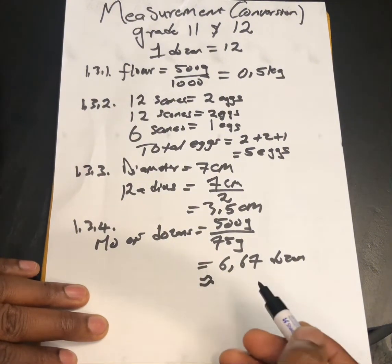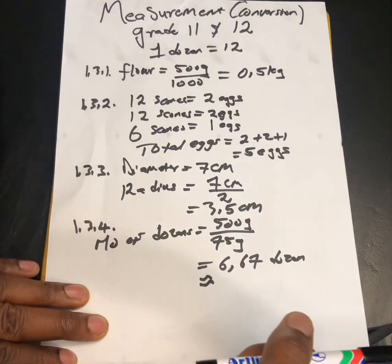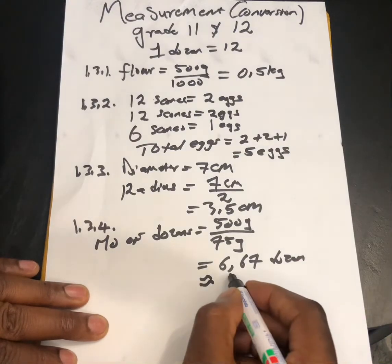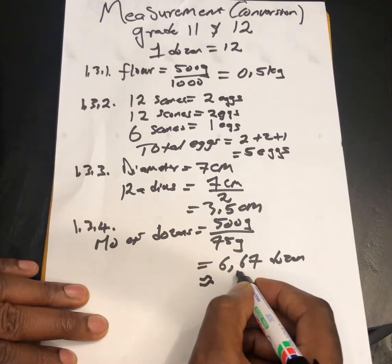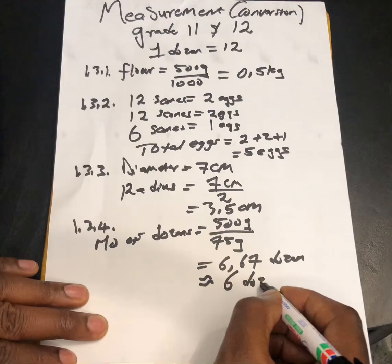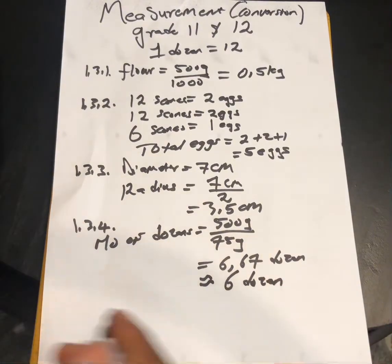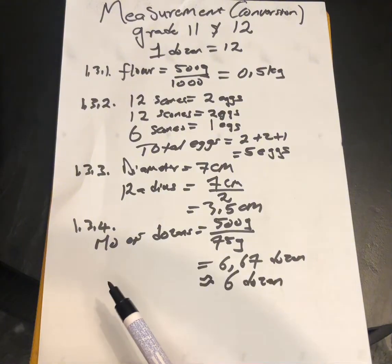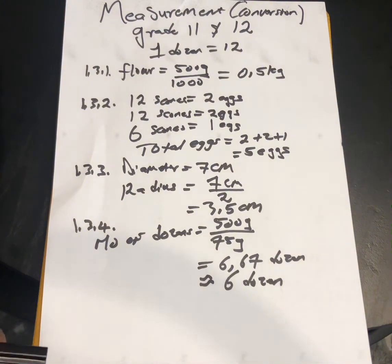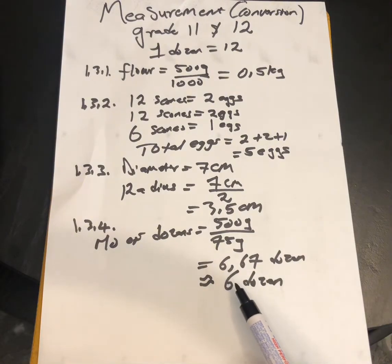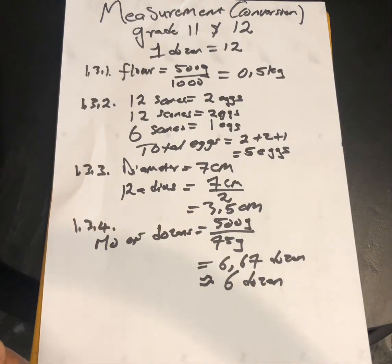Because we don't want a shortage of ingredients while making the scones, we round down to 6 dozen. We make 6 and not 7 so that the quality and the taste of the scones remain the same as per the ingredient.